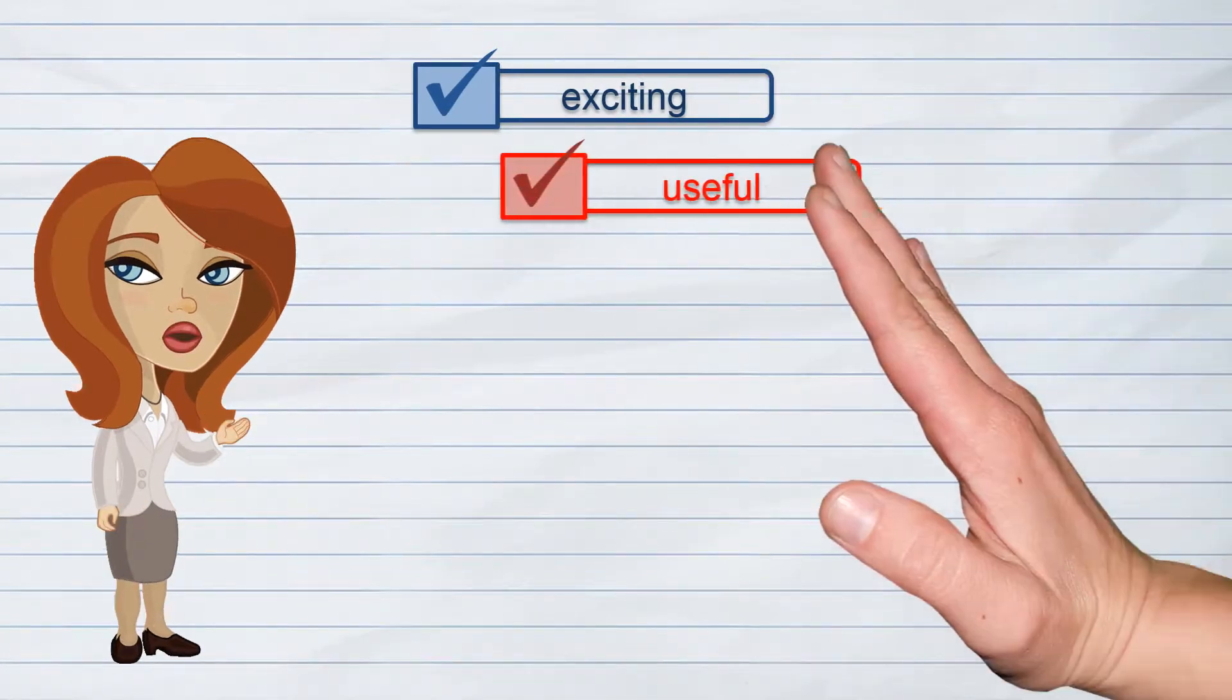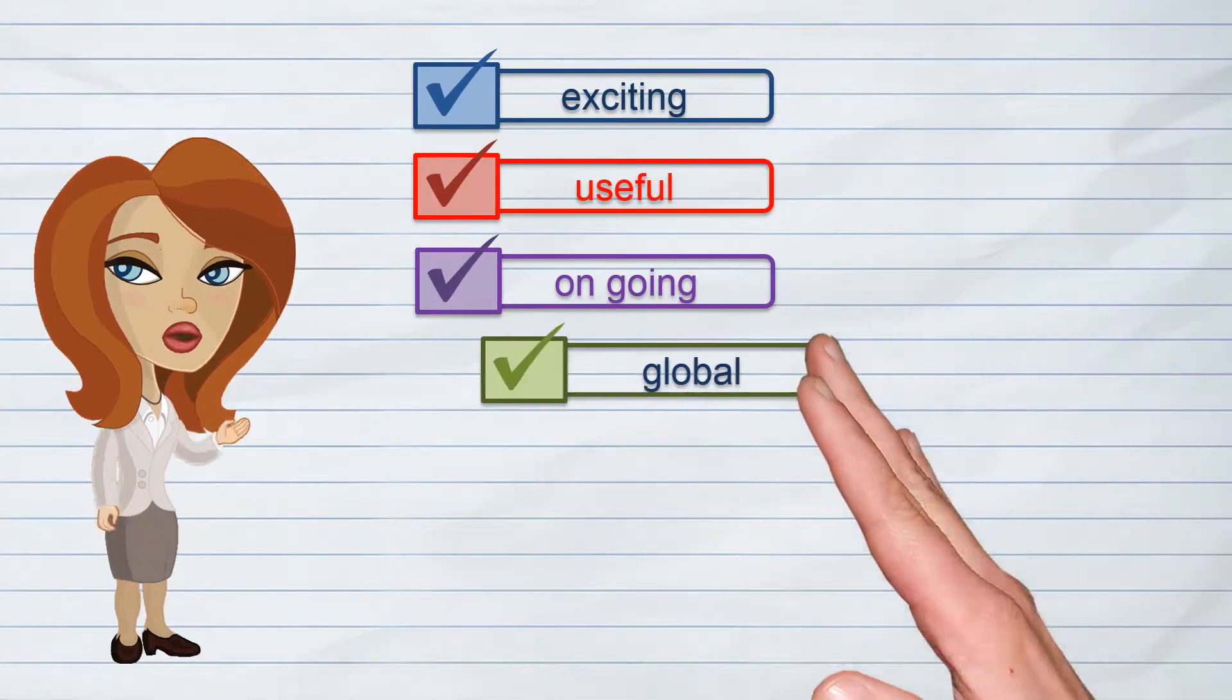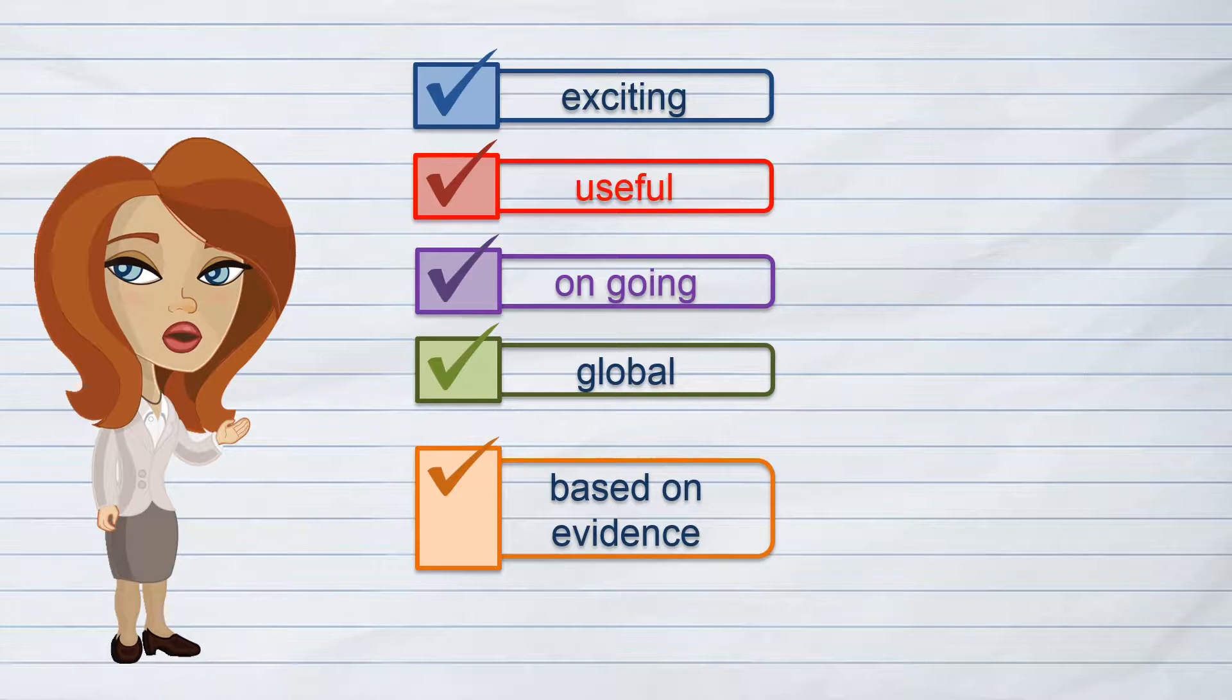Science is exciting, useful, ongoing, global, and based on evidence. Evidence can be repeated test results, conclusions made from other discoveries like inferences from the fossil records, as well as many observations by a community of people and scientists.